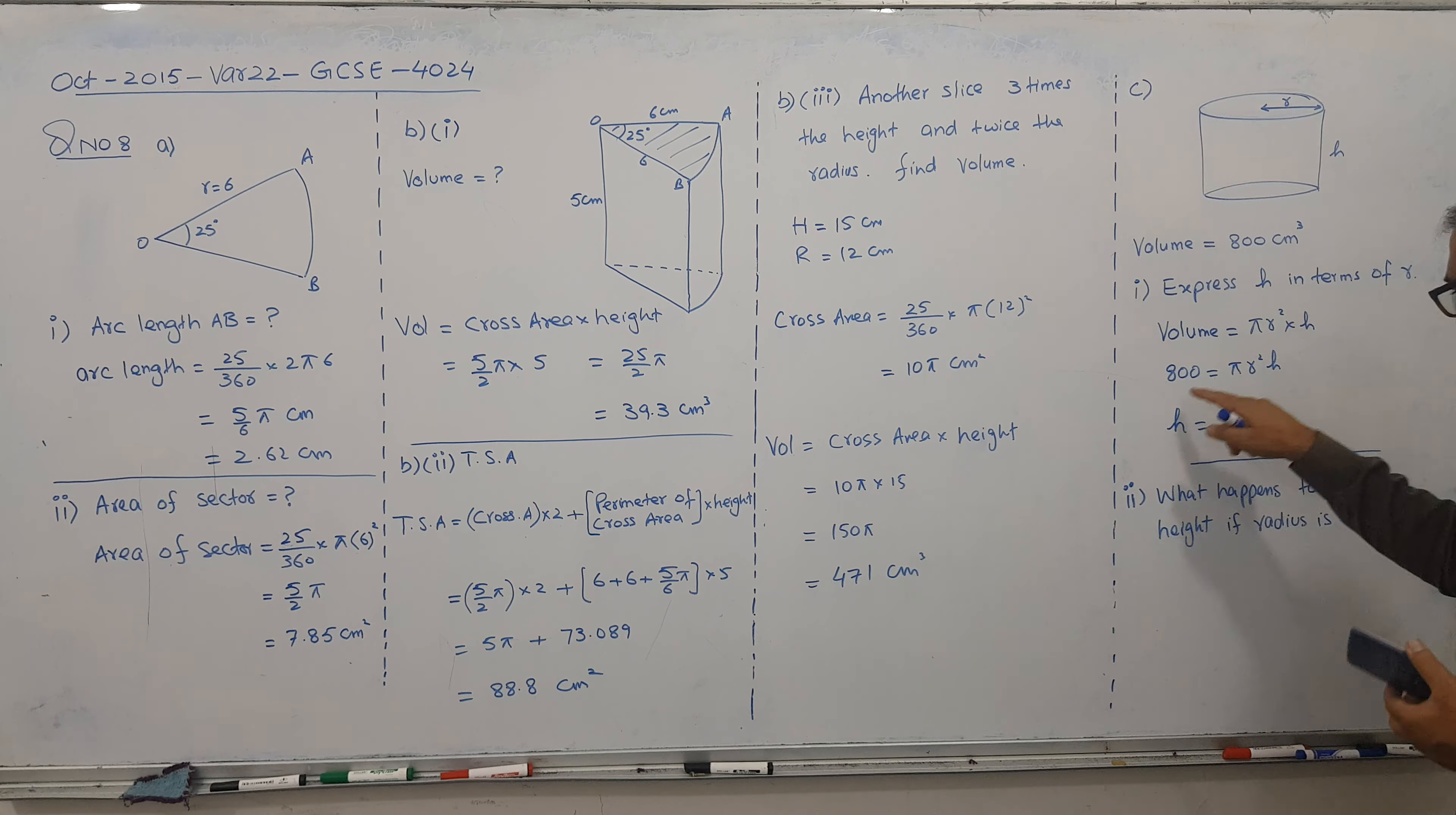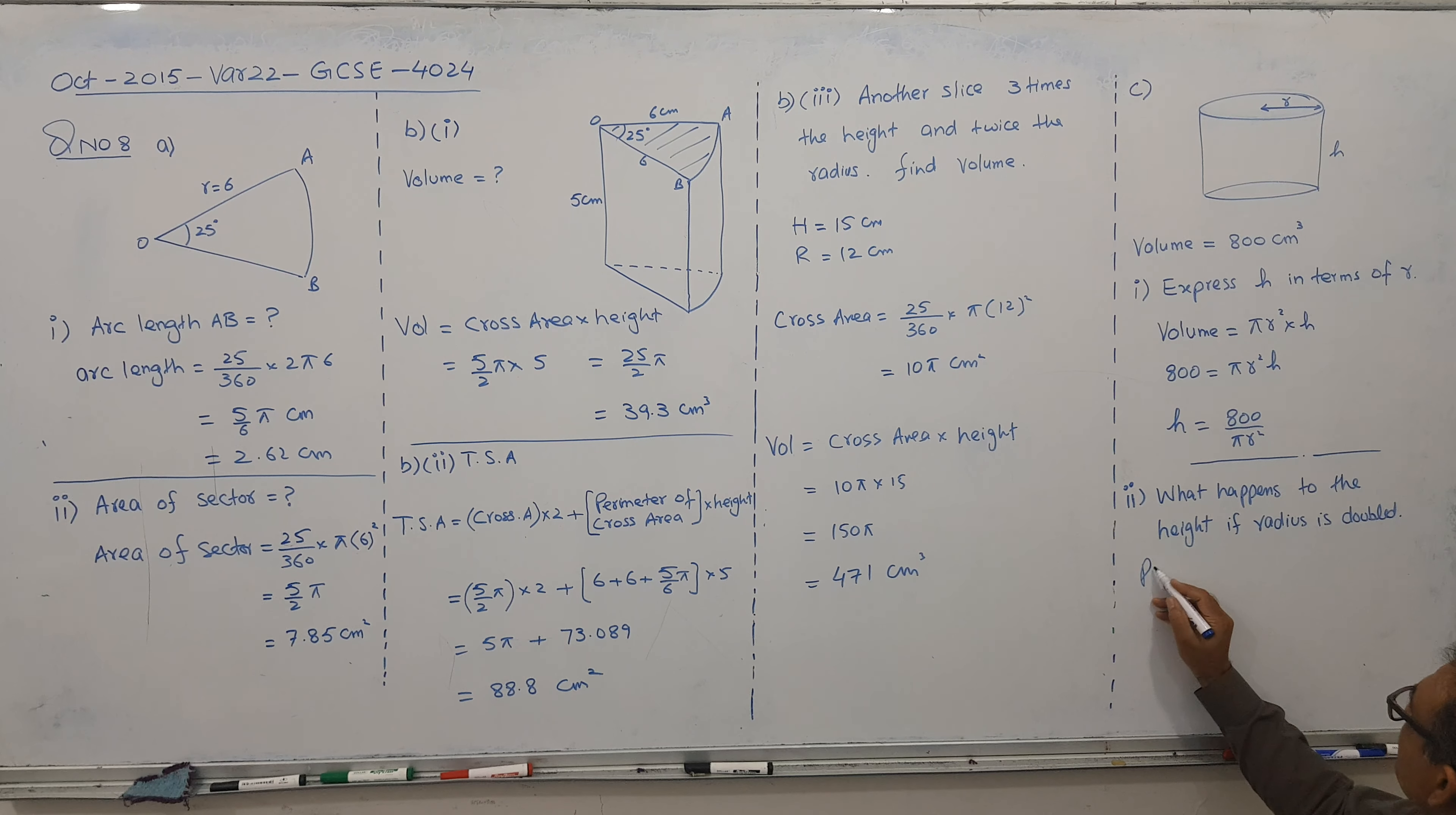So in this one you will replace what height happened. So put r equal to 2r. Let's see what happens then. Height equal to 800 by pi and I put 2r and square there. So height is coming. So 800 by pi into 4r squared. So I am writing here height equal to, don't cancel it. 1 by 4 into 800 by pi r squared. And you can see that height equal to 1 by 4 of the previous one.